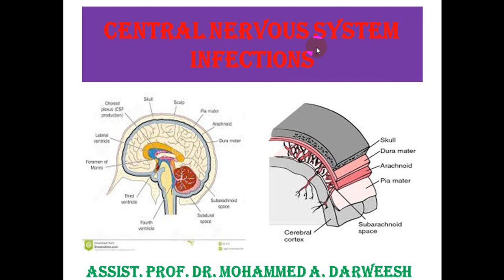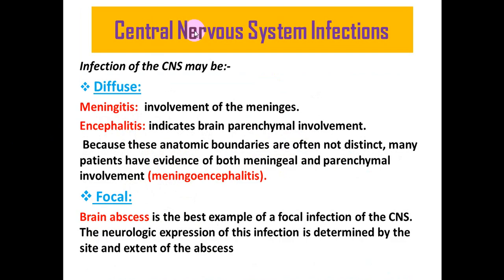This lecture is about central nervous system infections, concentrating on meningitis and encephalitis. CNS infections can be diffuse or focal. The best example of diffuse CNS infection is meningitis, which means involvement of the meninges, while encephalitis means involvement of the brain parenchyma. When both are involved, it is called meningoencephalitis. The focal example is brain abscess, whose clinical picture depends on the site and size of the abscess.